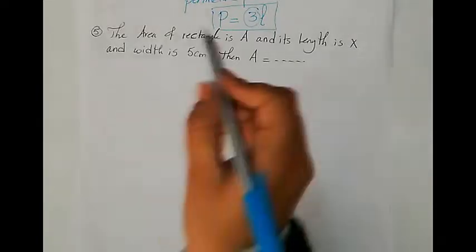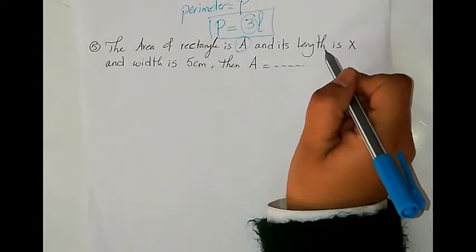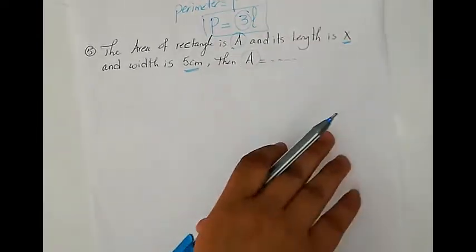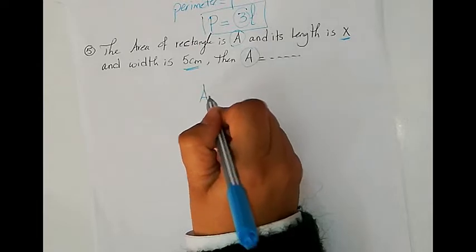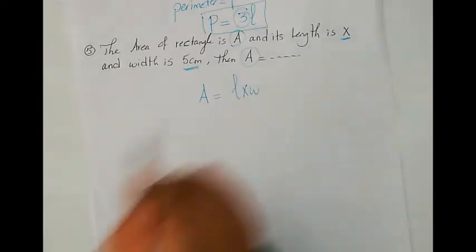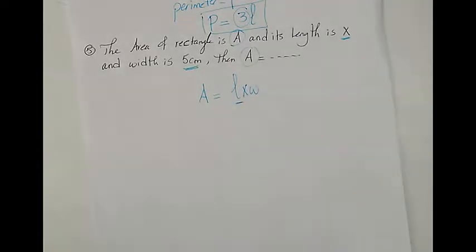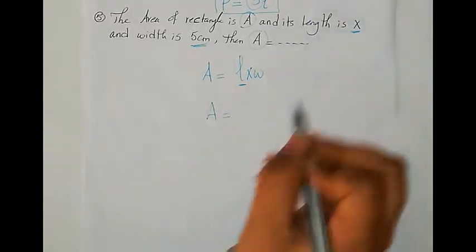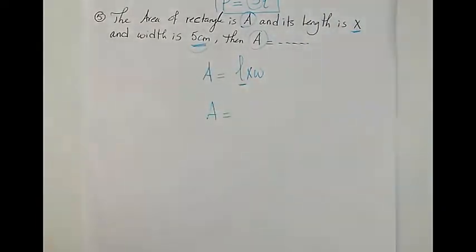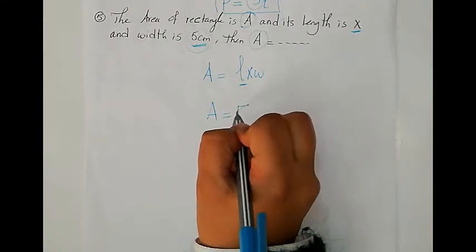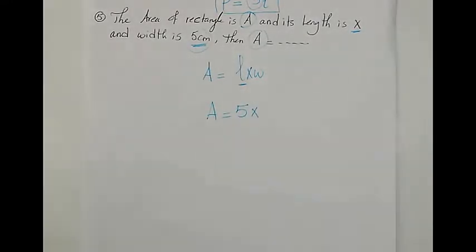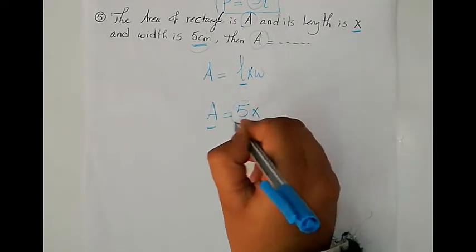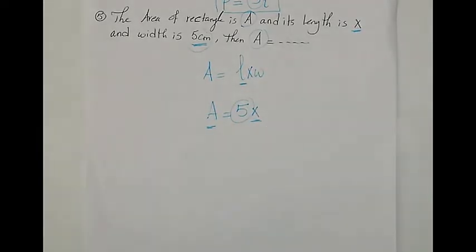Next question: the area of a rectangle is A, its length is X, and its width is 5 centimeters. As you know, the area of a rectangle equals length multiplied by width. Here, the length is denoted by X, so area equals X multiplied by 5, which gives A equals 5X. Here we have two variables — area A and length X — and one constant, which is 5, the width.